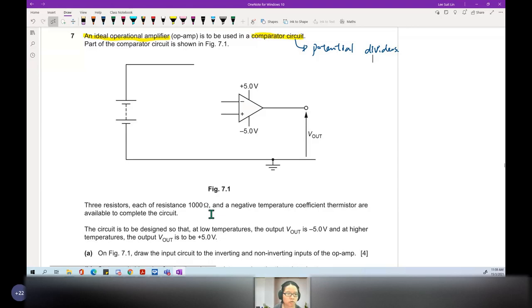Three resistors, each of resistance 1000 ohm, three times, and a negative temperature coefficient thermistor is available to complete the circuit.